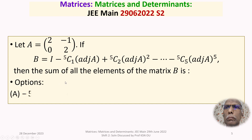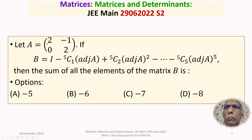We are given four options: option A is minus 5, option B is minus 6, option C is minus 7, and option D is minus 8.